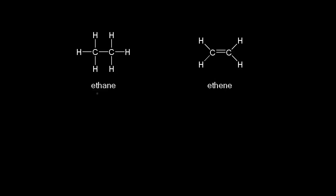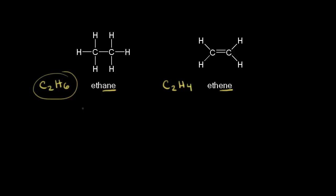Let's compare the structures of ethane and ethene. Ethane is an alkane with an -ANE ending, and it has the molecular formula C2H6. For two carbons, six hydrogens is the maximum number that you can have, so we say that ethane is completely saturated with hydrogens.